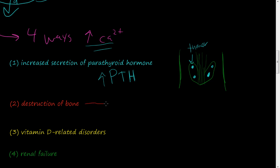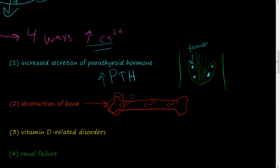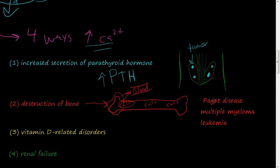With the destruction of bone: inside bone, there are calcium deposits — you have a lot of calcium in your bones. So if the bone gets destroyed somehow, if there's some kind of tumor or cancer inside the bone, then the bone is going to be eaten away and the calcium inside the bone is going to go to the blood, and then you're going to have an increase of calcium in the blood. Paget's disease, multiple myeloma, and leukemia are examples of conditions that can cause destruction of the bone, which will then cause increased calcium in the blood.